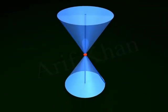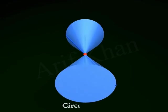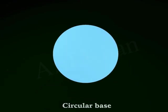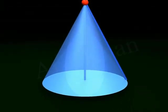The line that rotates about the vertex is called the generator, and the line that remains fixed is called the axis. A right circular cone has a circular base, and its axis is always a perpendicular line from the centre of the base to the vertex.